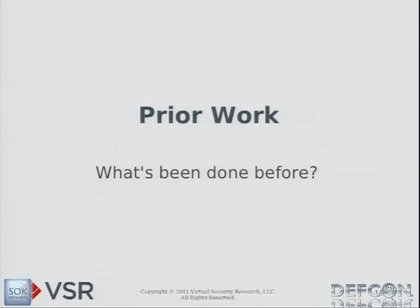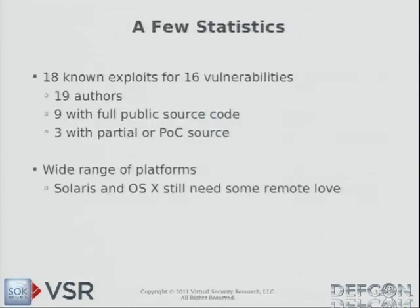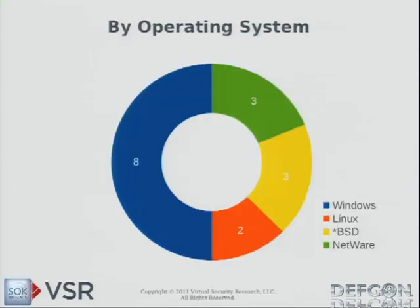Before getting into what I did, I'll talk about what's been done before. I researched every remote kernel exploit I could find and identified 18 exploits for 16 unique vulnerabilities, written by 19 people. Nine have full public source code, many as Metasploit modules. Three have partial or proof-of-concept source, and the rest were discussed at conferences without code. These exploits cover a wide range of platforms. Breaking them down by OS: half of the 16 vulnerabilities were in Windows — only four in Windows core components, three in wireless drivers, one in a Symantec firewall. Three in Netware, three in various BSDs, and two in Linux, one of which was in a third-party driver.